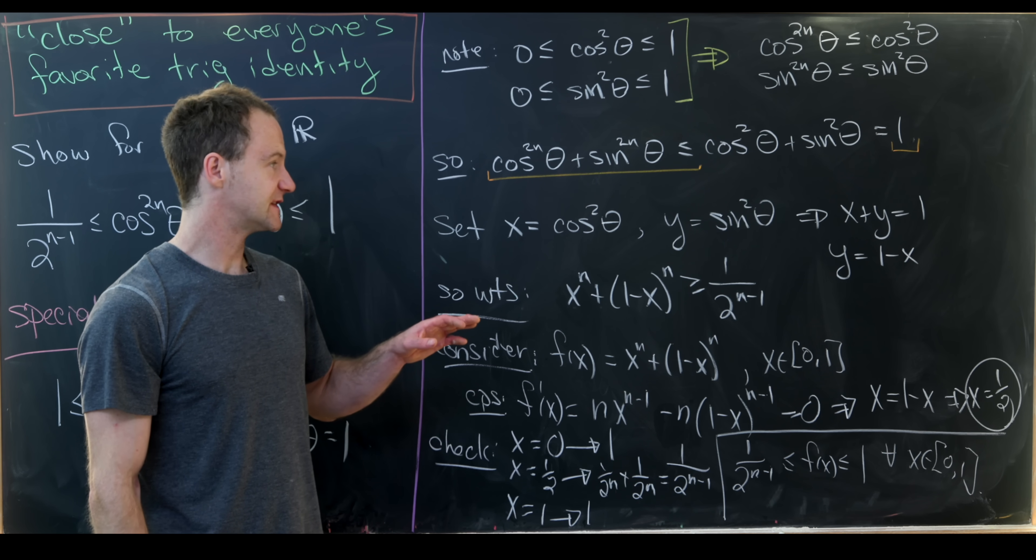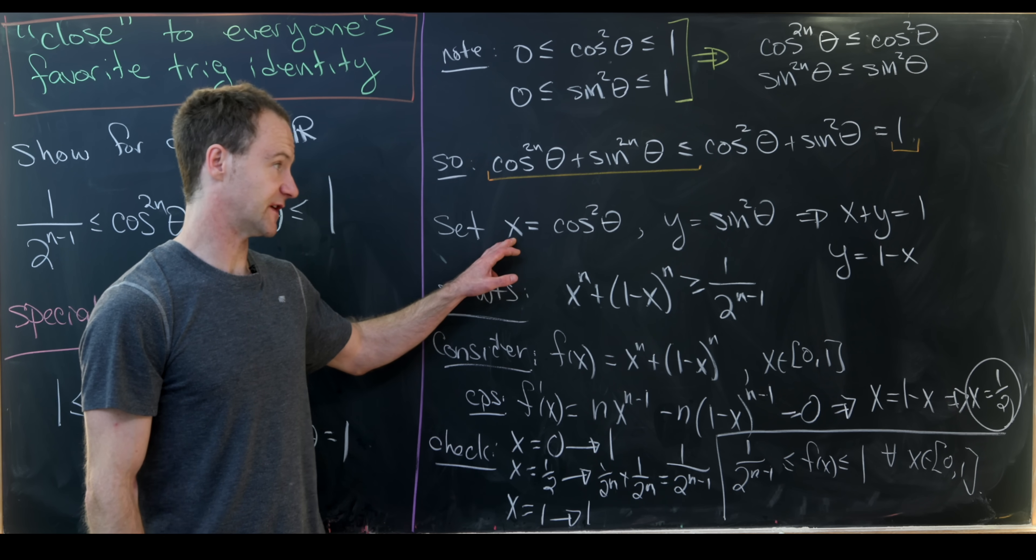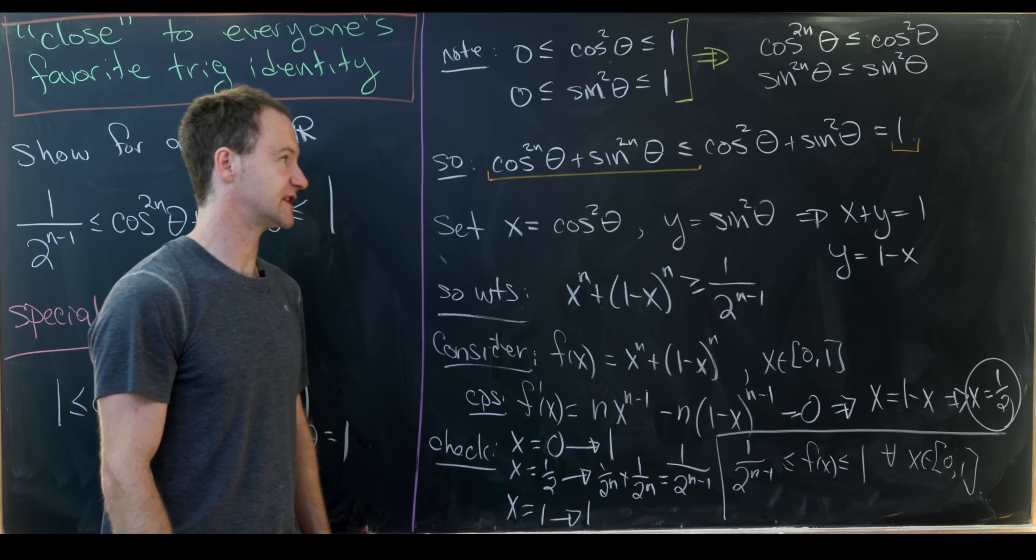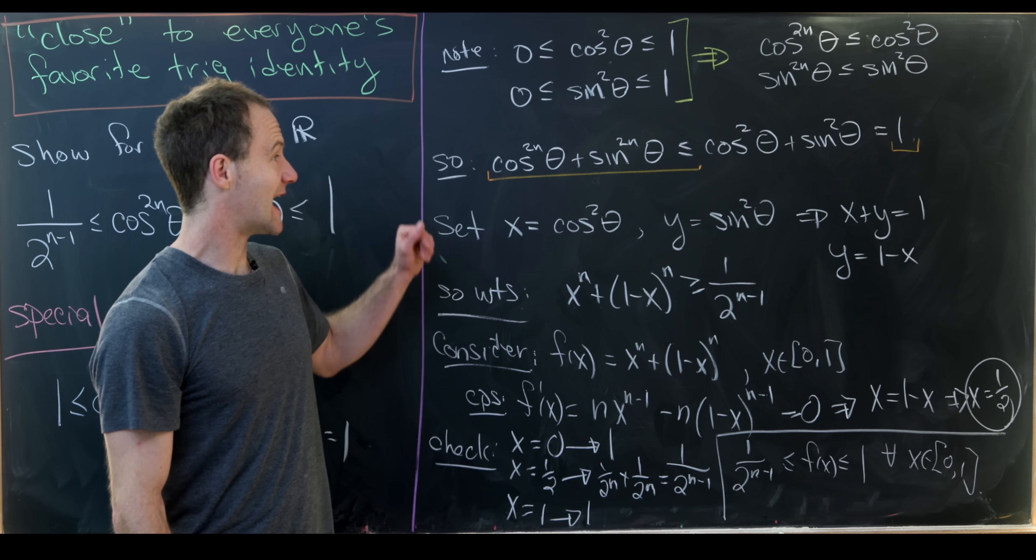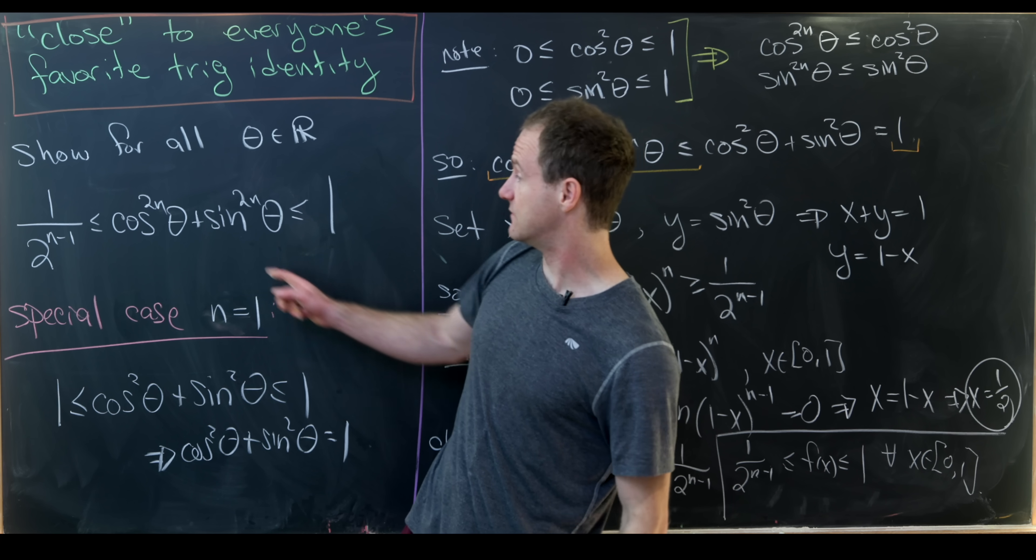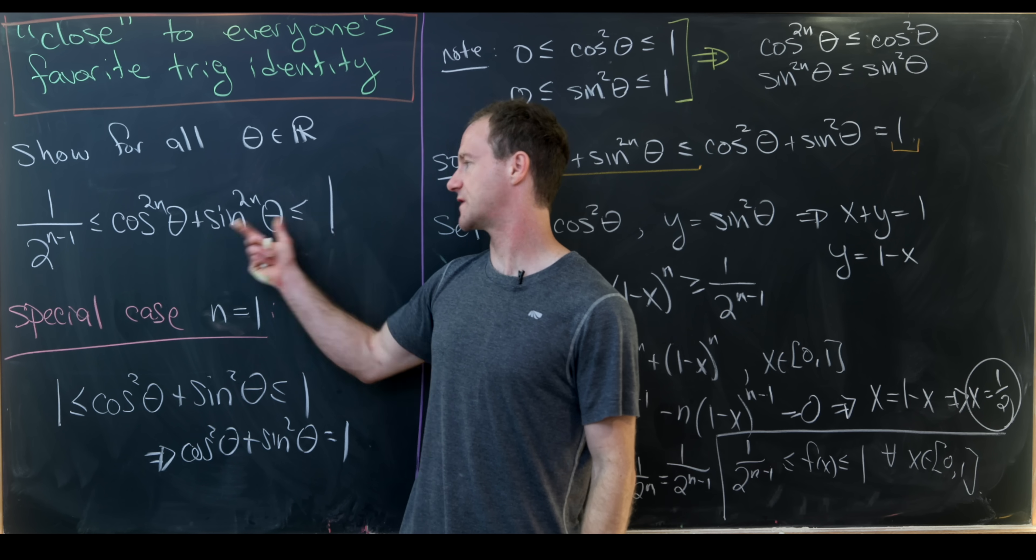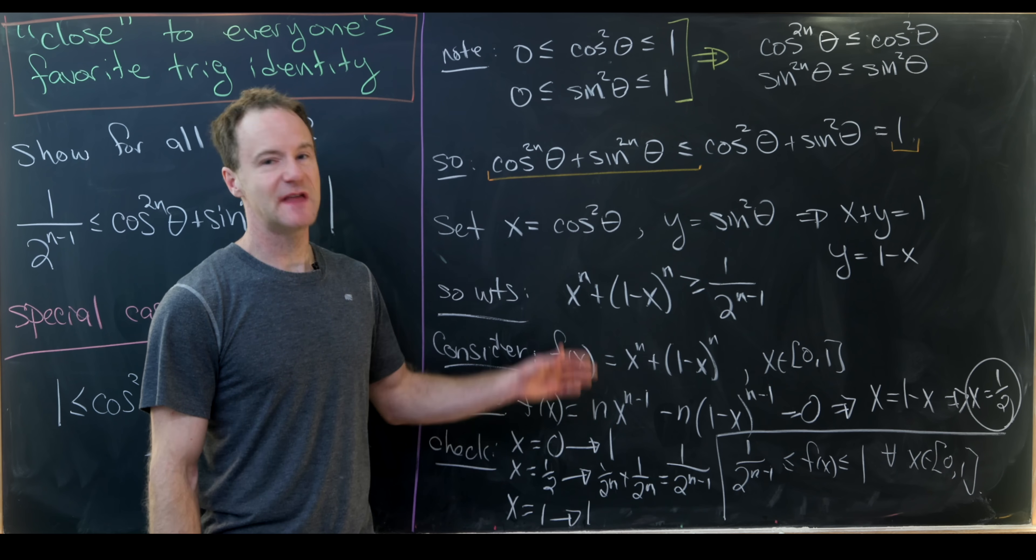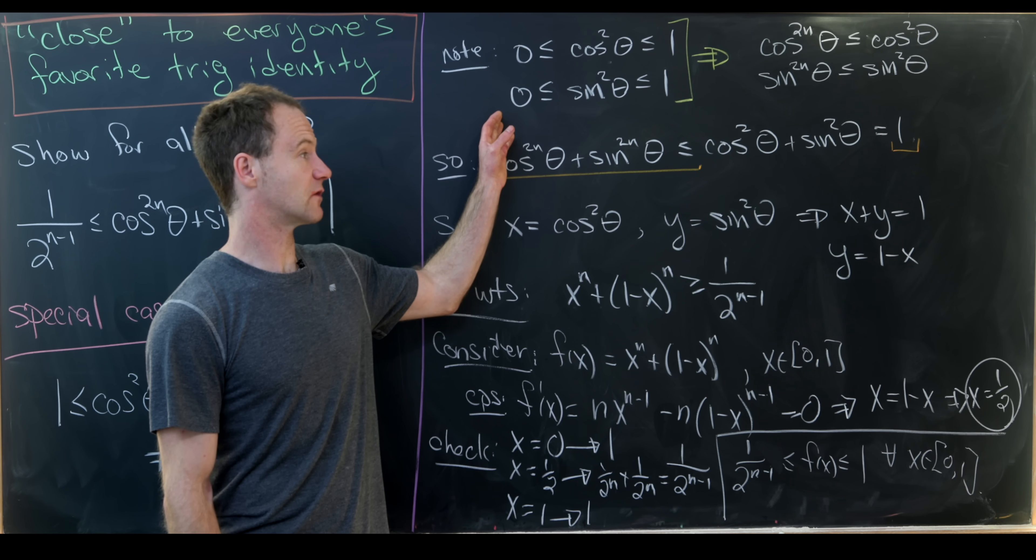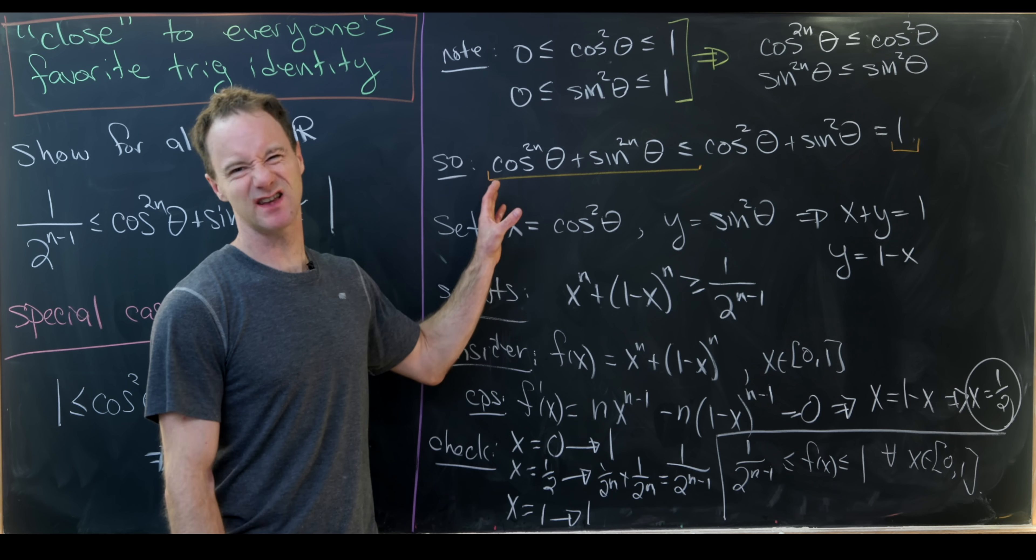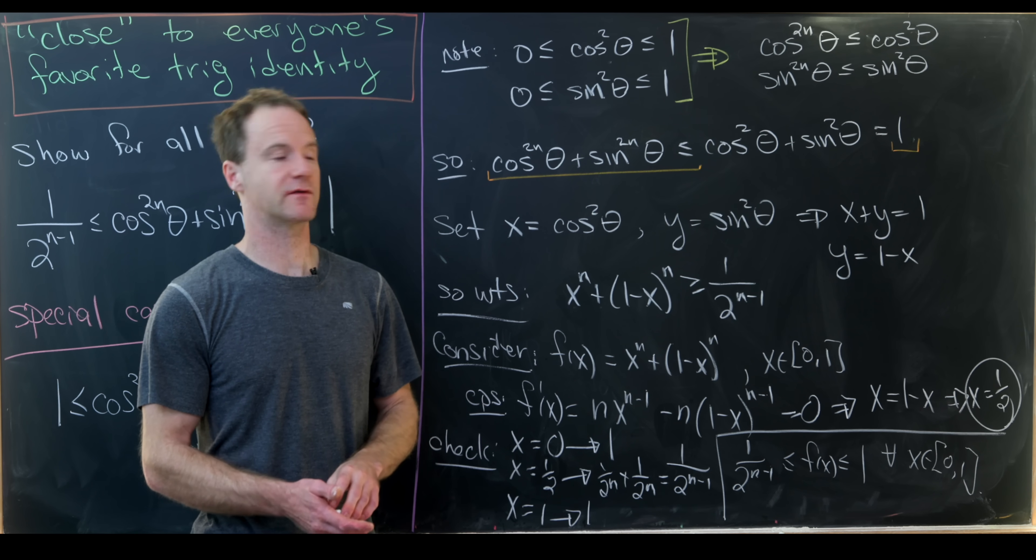But now putting this back into our original variables, x and y, which is cosine squared and sine squared, we see that we have indeed achieved the left-hand side of this inequality. In fact, we've achieved both sides of this inequality. That being said, I think it's kind of nice to do the right-hand side of this inequality with this other method just for a little bit of variety.